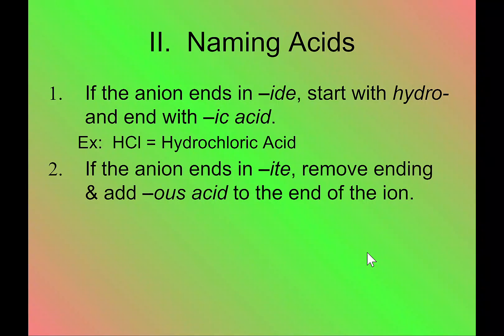Number two, if the anion, the negative ion, ends in -ite, so like sulfite, nitrite, phosphite, remove the ending and add -ous acid to the end of the ion. For example, SO3 is sulfite. And so therefore, this becomes sulfurous acid. Notice no hydro on the front. Even though the hydrogen is there, no hydro is added to this. The only time you're going to see hydro is in the -ic acids.